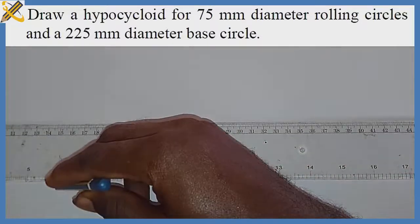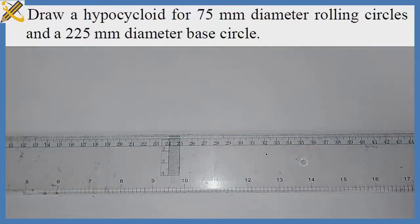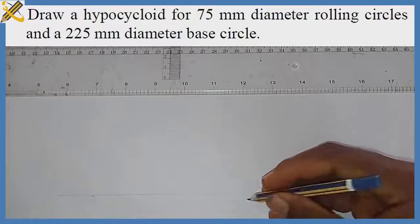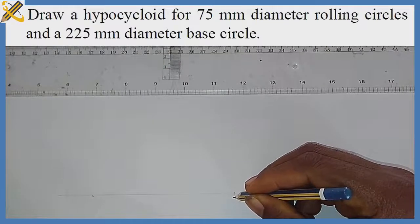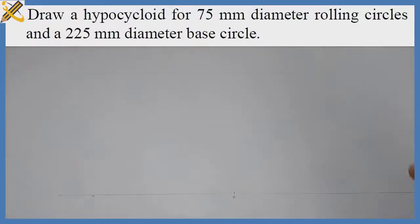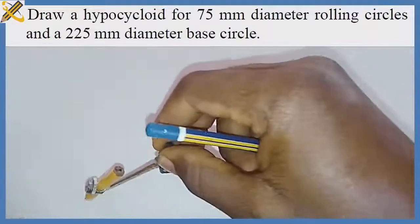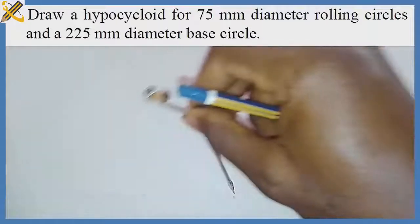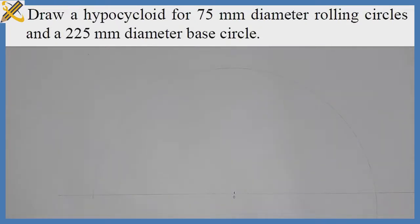The very first thing we need to do is produce a thin horizontal line in this manner, as you can see on the screen. After doing that, I'm going to pick any point on my paper as my point O. Then I'm going to pick the radius of 112.5 and produce a semicircle like this on the paper.